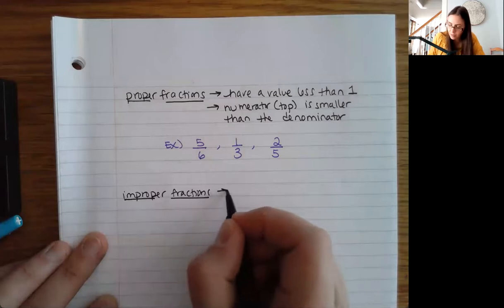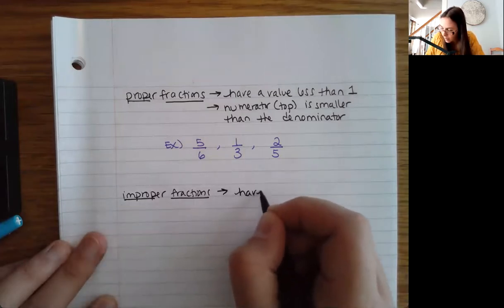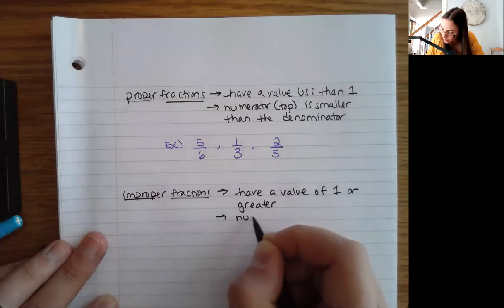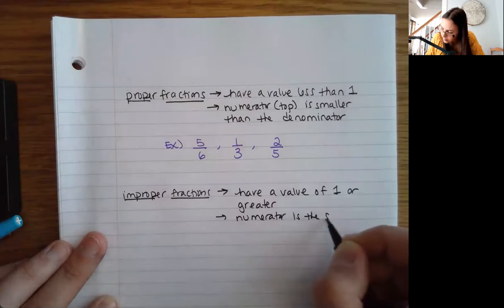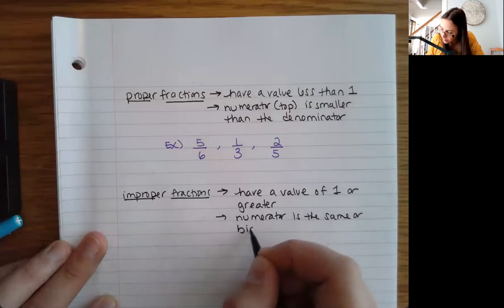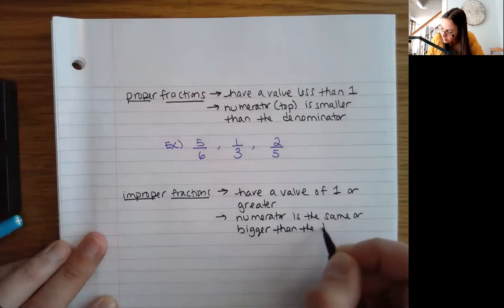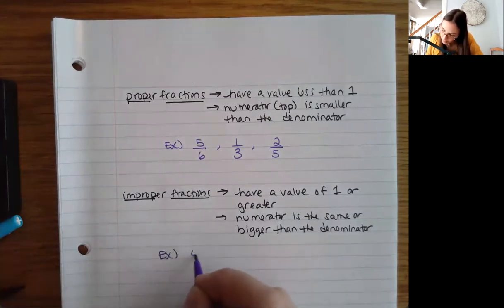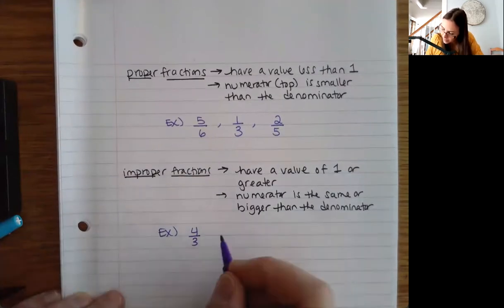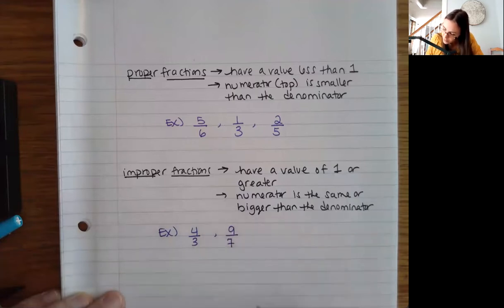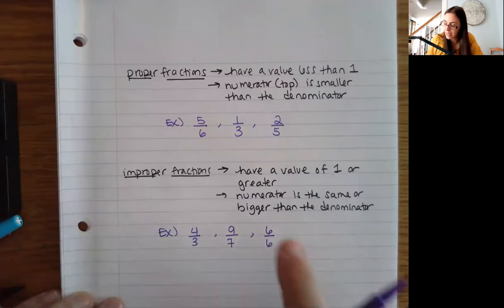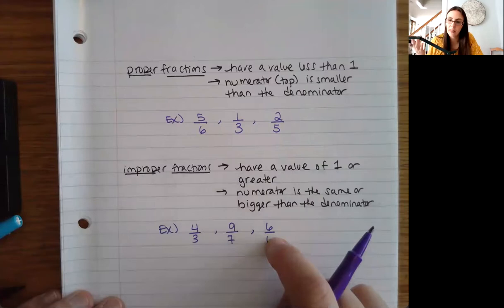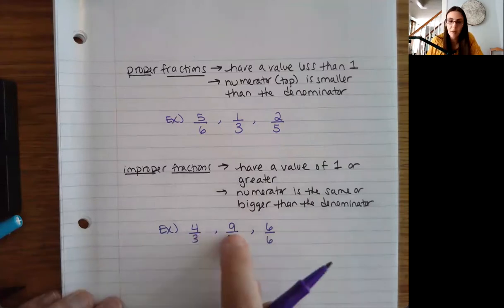We also have improper fractions. These have a value of one or greater. What happens is the numerator is the same or bigger than the denominator. Examples: something like four thirds — numerator is bigger than denominator. Or nine sevenths. Or even six sixths. If your numerator is the same or bigger, it's considered improper. Six divided by six is just one, and if your numerator is bigger than the denominator, the value is going to be over one.